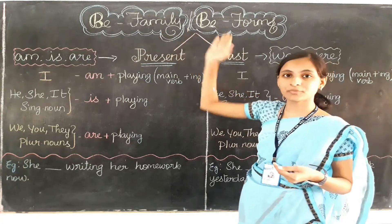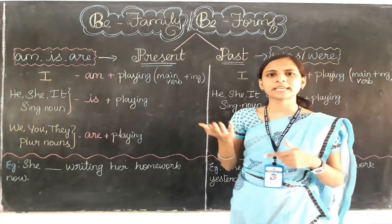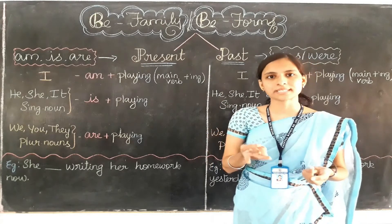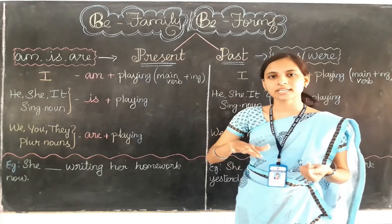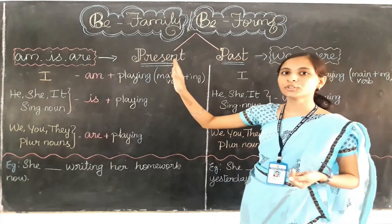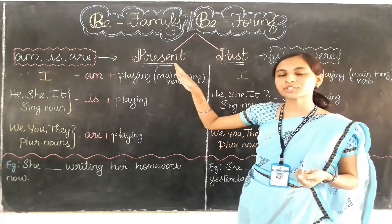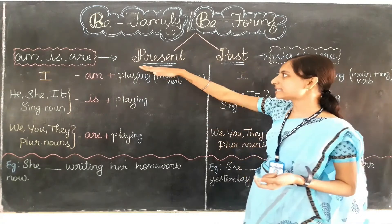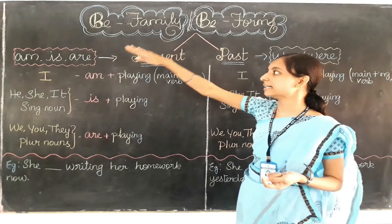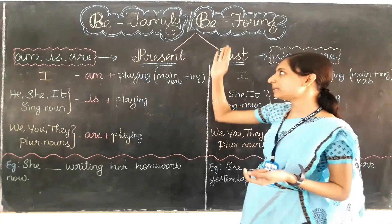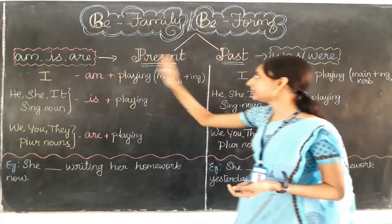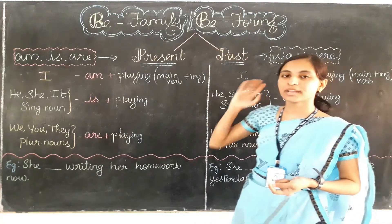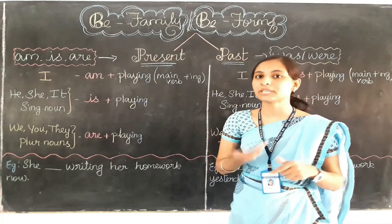Every family — like have family, do family — all of these have two types: present time and past time. They always tell us the present time as well as the past time. So what are the B family verbs or B form verbs? B form verbs are: am, is, are, was, were. There are five. These five verbs are the B family verbs or B form verbs.